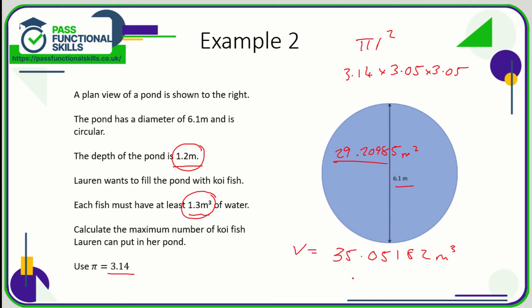It's just this amount here, which is still on my calculator, divided by 1.3. So 35.05182, which is still on my calculator, divided by 1.3, is 26.96. So we can get 26.96 fish in that pond, but obviously we can't have 0.96 of a fish.